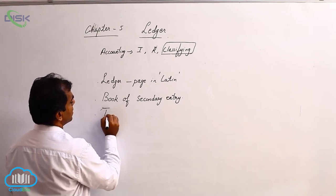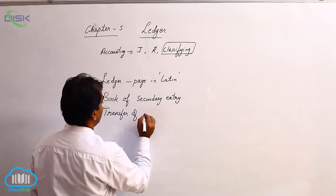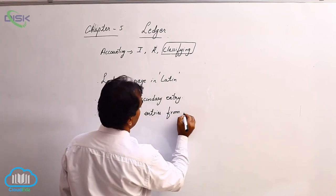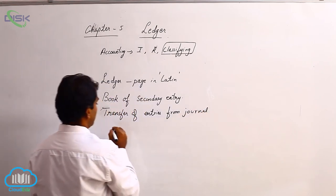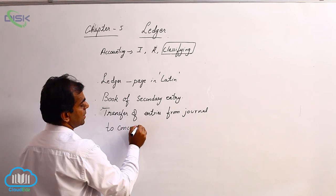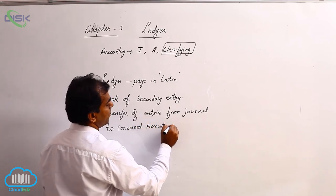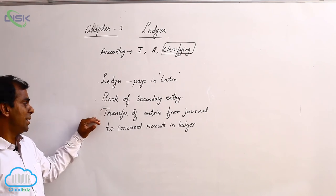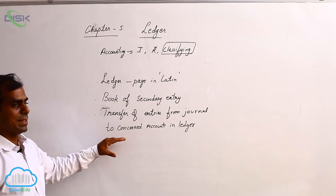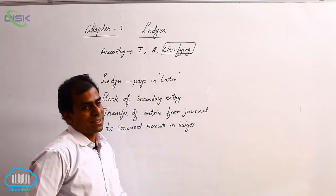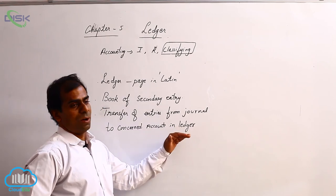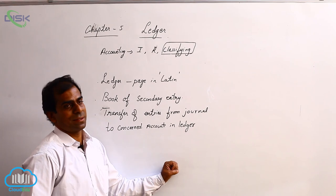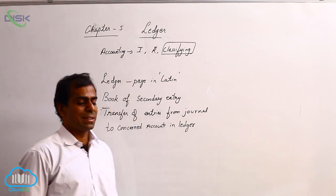We transfer entries from journal to concerned accounts in Ledger. So what we do? The journal entries which we have written in the journal, we take one aspect of the transaction and it might have got affected several times. So we collect all where it has got affected and collect under the head of that particular aspect. We have already given the example of cash to capital as one journal entry.